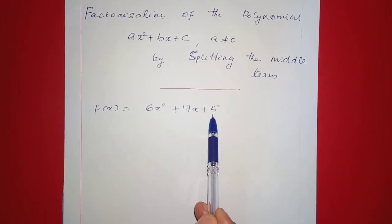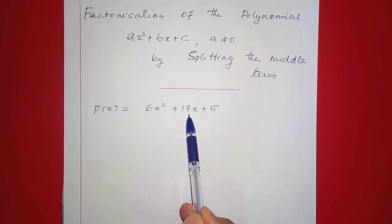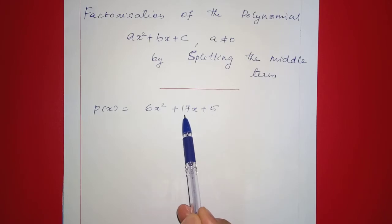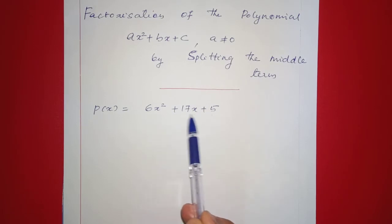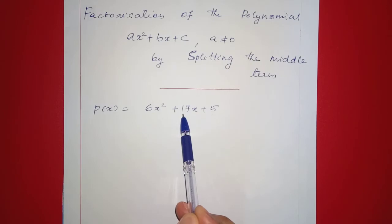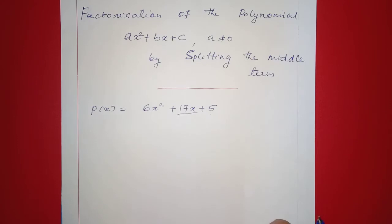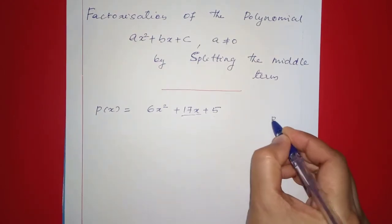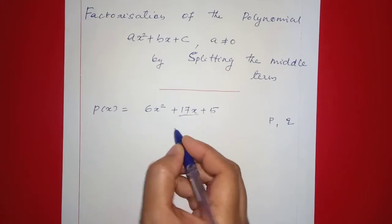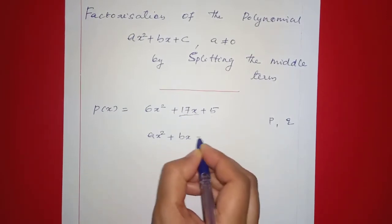Next, we have a quadratic polynomial. We can factor this polynomial using the middle term splitting method. The general form of a quadratic polynomial is x squared plus bx plus c. We find two numbers p and q such that their product equals the constant term and their sum equals the middle coefficient.